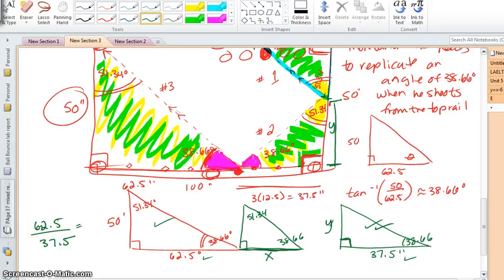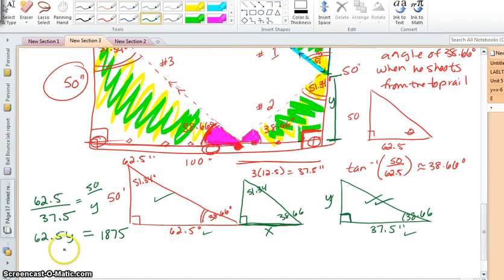62.5 is to 37.5 as 50 is to y. 62.5y equals, push the buttons for me for 37.5 times 50, 1875. Divide both sides by 62.5. Divide both sides by 62.5 and we have a y distance of 30 inches. So let's replace y with 30.